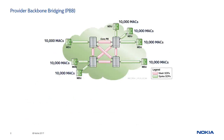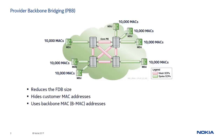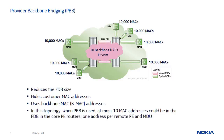Provider Backbone Bridging along with Hierarchical VPLS can be used to reduce the control plane signaling and the size of the forwarding database. PBB hides the customer MAC addresses and uses provider MAC addresses referred to as backbone MAC or BMAC addresses. When PBB is used, the PE routers in the core will now only have at most 10 backbone MAC addresses in their FDB — one address for each remote PE and remote MDU — thus significantly reducing the FDB size.